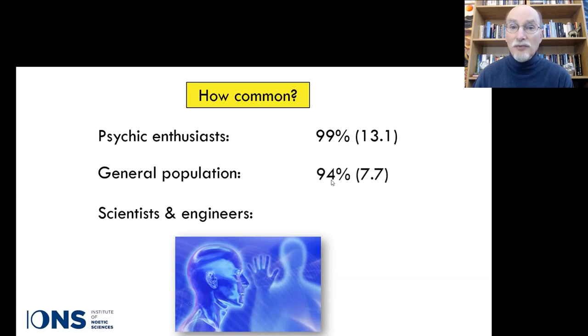General population, also pretty high, on average almost eight. Scientists and engineers, also extremely high, and even more reported than the general population.